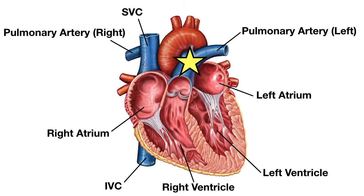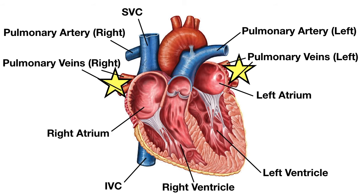Specifically, where the star is indicated is the pulmonary trunk or main pulmonary artery, which splits into the right and left pulmonary arteries. Their function is to deliver deoxygenated blood from the right side of the heart to the lungs. The blood vessels delivering blood from the lungs to the left atrium are the pulmonary veins, carrying oxygenated blood to the left side of the heart. The final main blood vessel exiting the left ventricle and delivering blood to the rest of the body is the aorta.